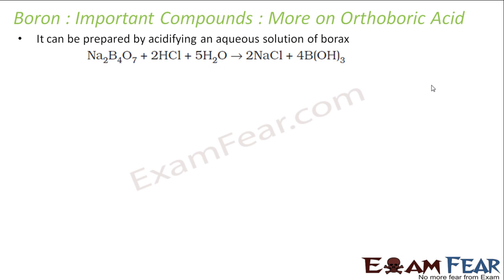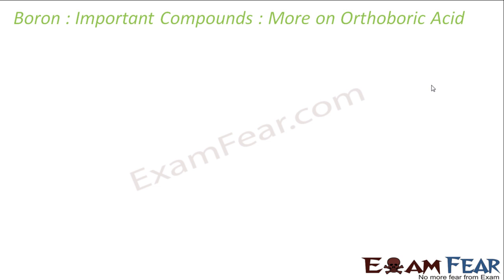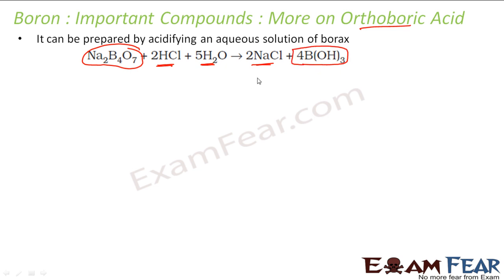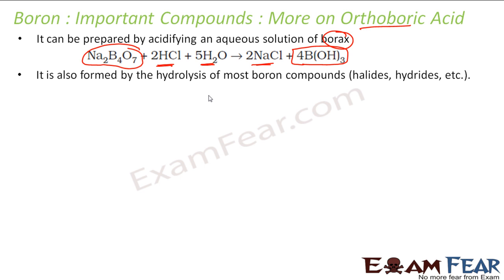Boric acid is a weak monobasic acid. To prepare it, you acidify a borax solution — take borax and add hydrochloric acid in water, and you get boric acid. It is very easy to prepare from borax by acidifying it in aqueous solution. You can also prepare it from boron halides and hydrides.